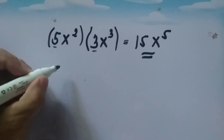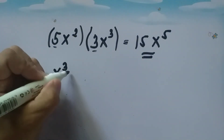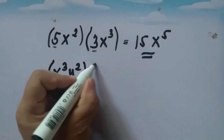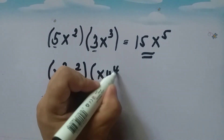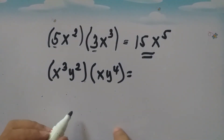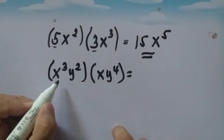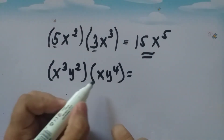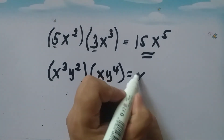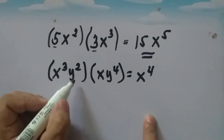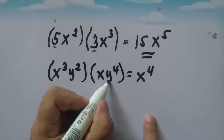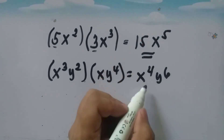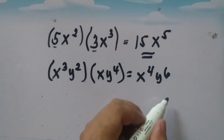Another example: x cubed y squared times x y to the fourth. We get the product of x cubed and x first — x cubed times x is x to the fourth. Then y squared times y to the fourth is y to the sixth. So our final answer is x to the fourth y to the sixth.